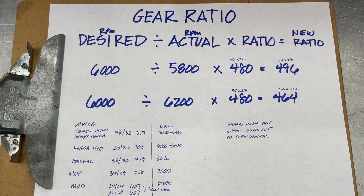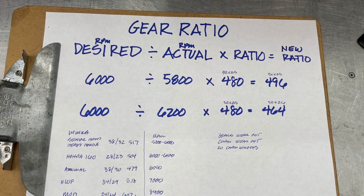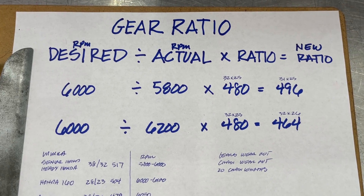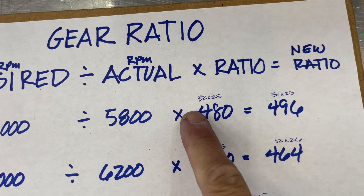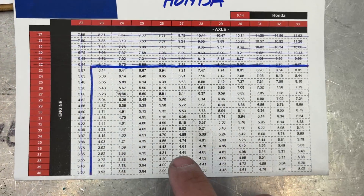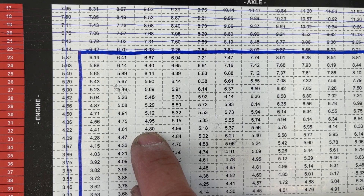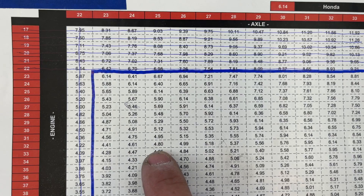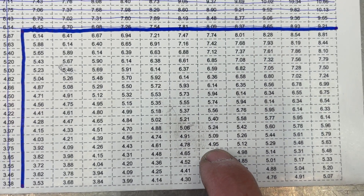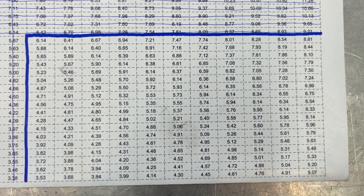A lot of people say that the axle gear — one tooth up or down — is worth 200 RPM, and that the engine gear is worth 100 RPM. But we find that to be a little bit off, so we always calculate the gear. For instance, on this one we got a 32-25 at a 480, and now we calculated that we need a 496. We go to 480 on our chart, and we're looking for a 496 — 495 is right there. We may not find a 496 exactly, or we may have to change both gears in the car. It's just nice to be able to only change one gear instead of both.